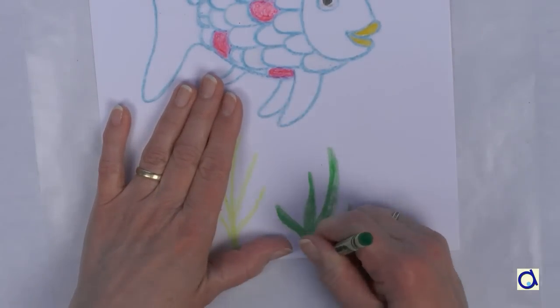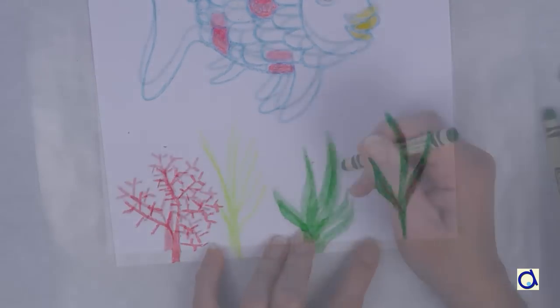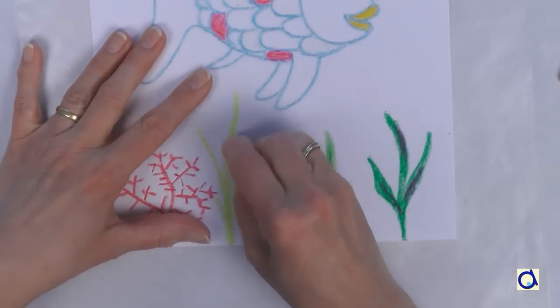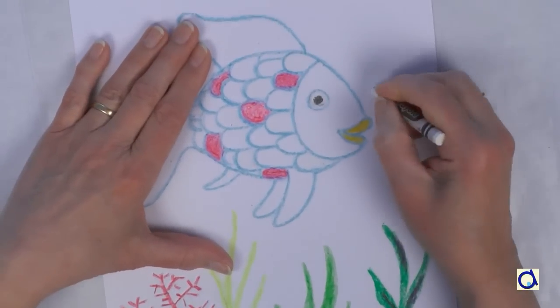Still in relation to the science subject, you can explain to children how fish breathe underwater. With white crayon, you can represent the carbon dioxide bubbles that fish reject while breathing.